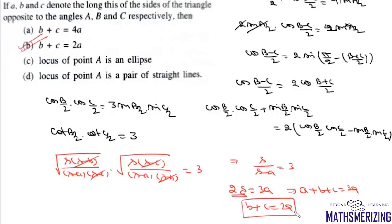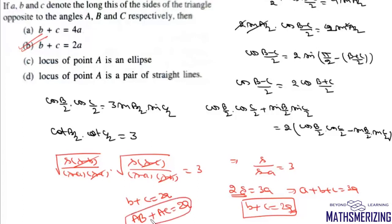Since BC is fixed, side a is constant while b and c vary. They vary such that b + c = 2a, i.e., AB + AC = 2a. This is the focal property of an ellipse: PS₁ + PS₂ = 2a. So the locus of vertex A is an ellipse, which is option C.